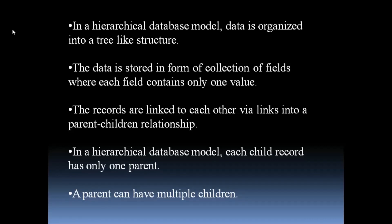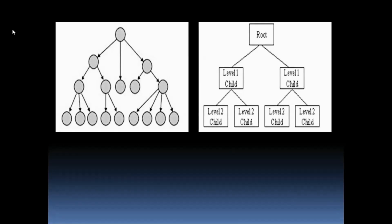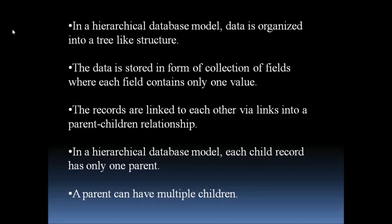You can see the example diagram where fields are connected in a tree-like structure — there is a parent-and-child relationship. One important thing in the hierarchical database model: each child should have only one parent. Parent and child should always be connected through links, and a parent can have multiple children.